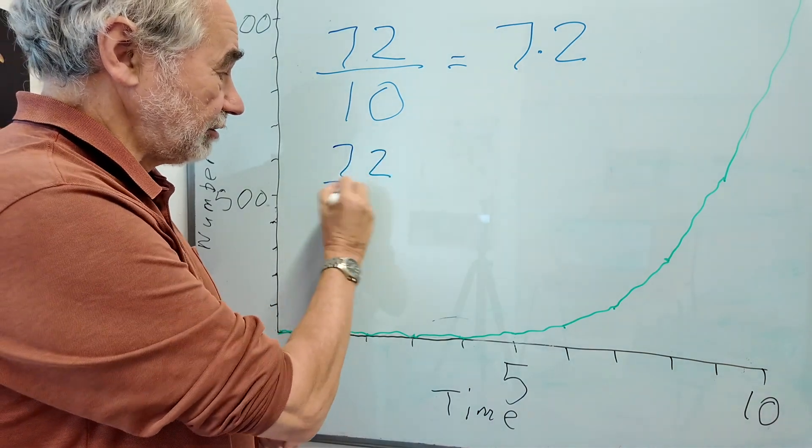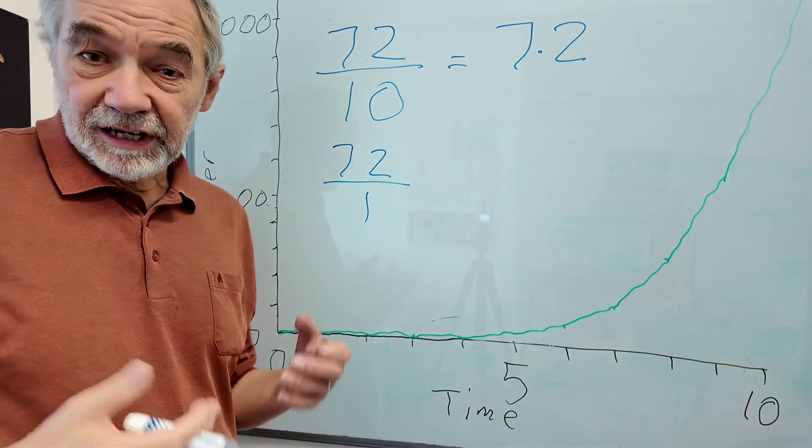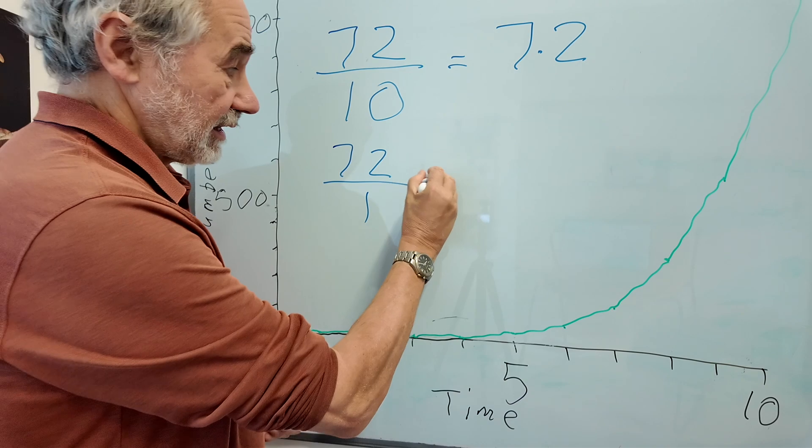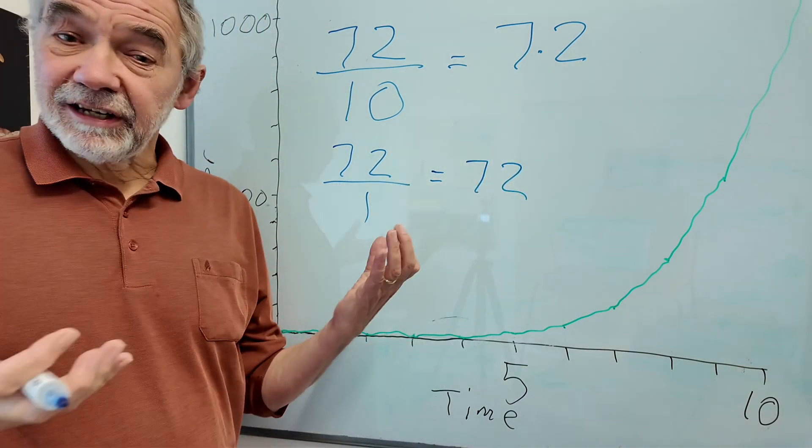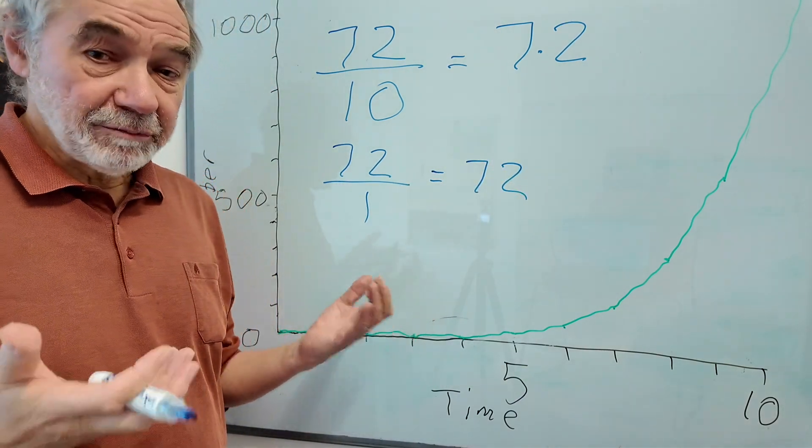Or imagine you have 72 and it just increases at 1% a year, that obviously equals 72. So it's going to take about 70 years before it doubles.